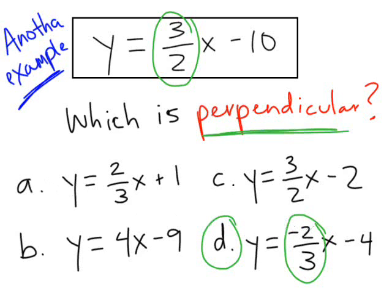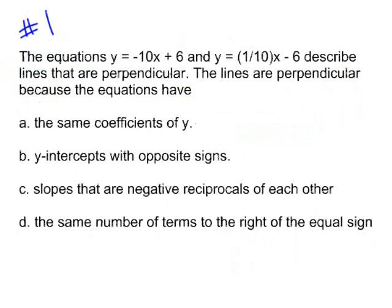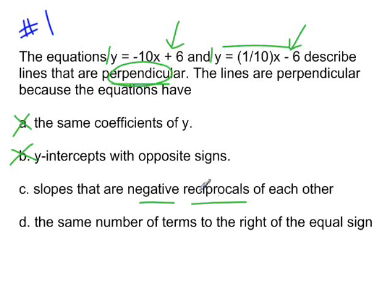All right, now the real problems. The equations y equals negative 10x plus six and this one described lines that are perpendicular. The lines are perpendicular because the equations have which of these four? So go through and pick which of those four is the correct answer. All right, now I'm going to give you, I'll go through these. Same coefficients of y? Well, that's true, they both have a one right there, but that's not why they are perpendicular. Y-intercepts with opposite signs? Well, again, that's true, a plus six and a minus six, but that's not why they're perpendicular. Slopes that are negative reciprocals? Yeah, and I use the word opposite right here, but you can say negative reciprocals also. That is your correct answer. Let's just make sure. The same number of terms to the right side? Well, that's true, they have one, two on each, but again that's not why. All right, so the correct answer is c.